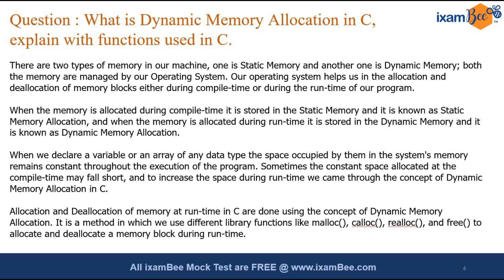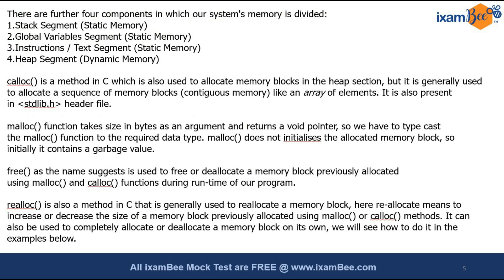Both allocation and deallocation are part of dynamic memory — DMA covers both. Explain the functions involved and which header libraries they belong to. The functions malloc, calloc, realloc, and free are all used to allocate and deallocate memory during runtime. Then explain the memory systems: static memory uses the stack, global variables, and instructions, while dynamic memory uses the heap. Explain the heap segment that dynamically allocates memory during runtime, and then explain calloc, malloc, free, and realloc individually.